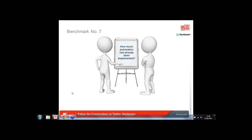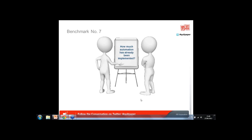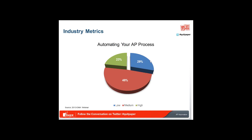Results: 30% of you rate yourselves as high — congratulations. 51% coming in as medium, and 19% as low. Our poll ties out almost exactly to where this metric sits in broader reporting — the bulk of companies have done some things but have not taken it to the nth degree, and about a third are still at the early stages of looking at automating their process.